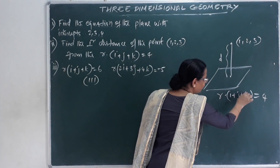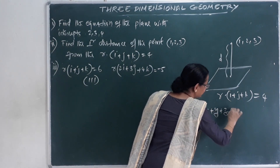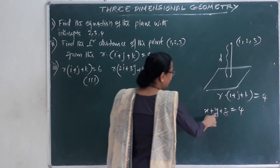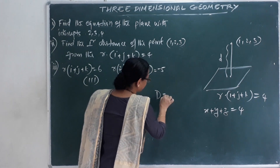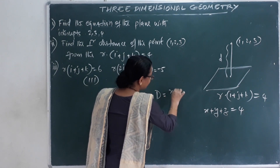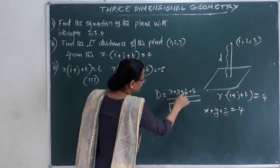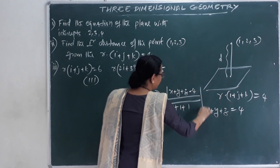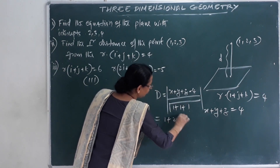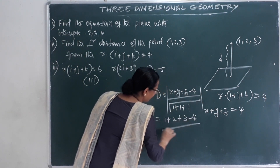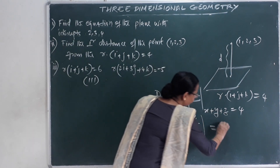The Cartesian equation is x + y + z = 4. Using the distance formula: distance = |x₁ + y₁ + z₁ − 4| / √(1² + 1² + 1²). Substituting point (1, 2, 3): |1 + 2 + 3 − 4| / √3 = 2/√3.